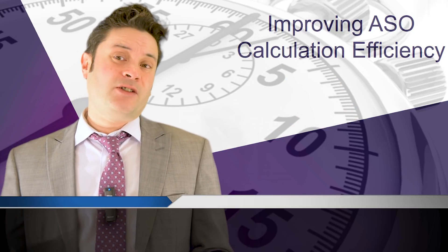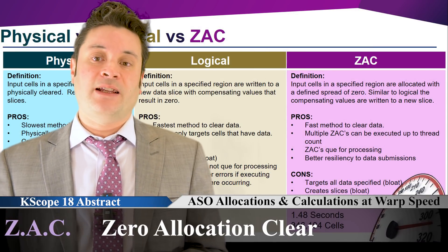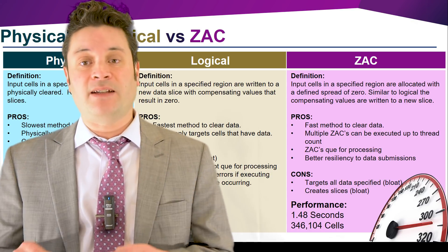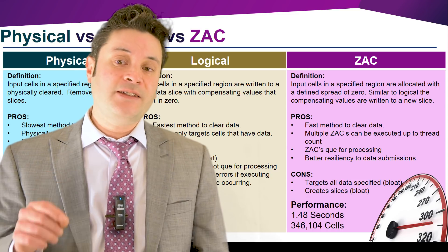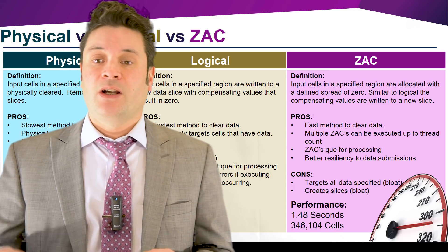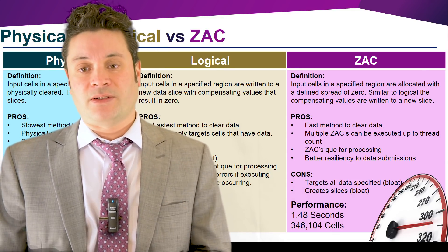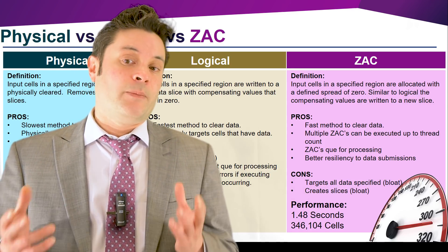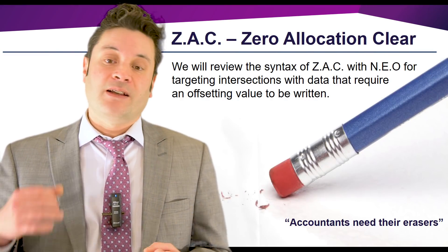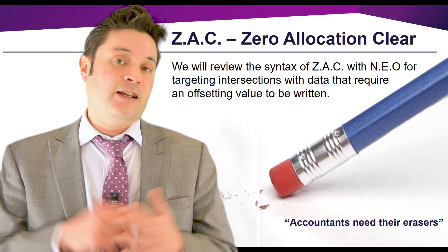The next methodology we would like to review for Kscope 18 is ZAC — Zero Allocation Clears. ZAC is an absolute necessity for an ASO application that is utilized in a multi-user environment where users are able to run calculations and submit data directly. ASO only provides two clears to remove data: physical and logical, both of which will cause clear contention issues for users while running business rules or submitting data when a clear is taking place. The zero allocation clear works much like a logical clear, but it uses an allocation method combined with NEO to clear targeted data. ZAC can be utilized in a multi-user environment and we will be reviewing the syntax and use cases in our Kscope session.